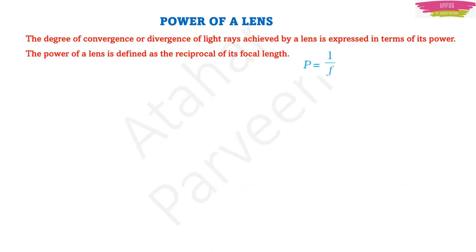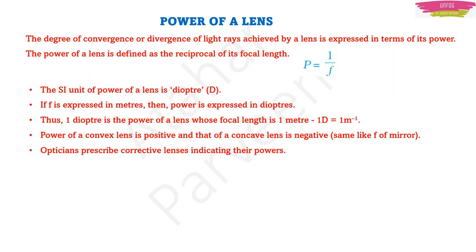The power of a lens is the degree of convergence or divergence of light rays, defined as the reciprocal of focal length: P = 1/f. The SI unit of power is the diopter, denoted by capital D. If focal length is in meters, power is in diopters — so 1 diopter equals the power of a lens of focal length 1 meter. Power of a convex lens is positive and that of a concave lens is negative.